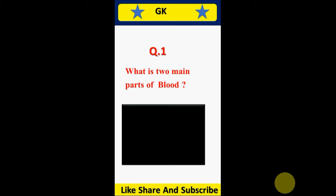Question 1. What are the two main parts of blood? Answer: Plasma and blood corpuscles.